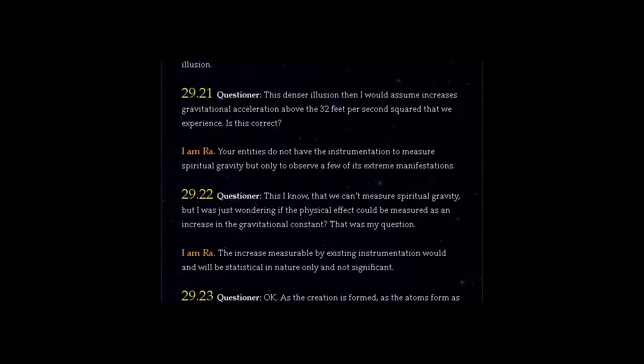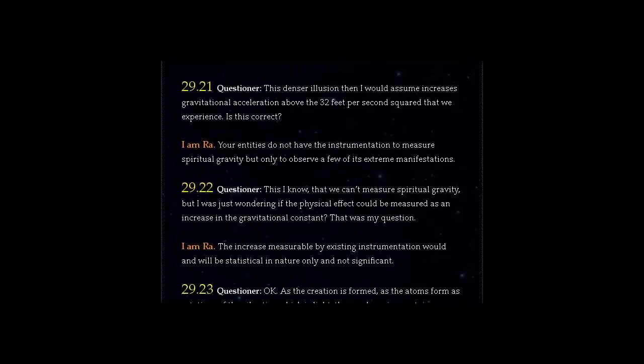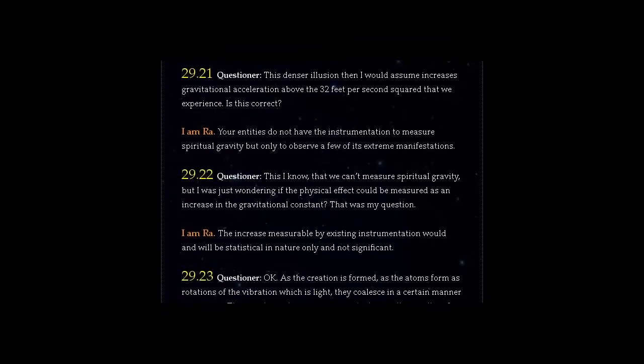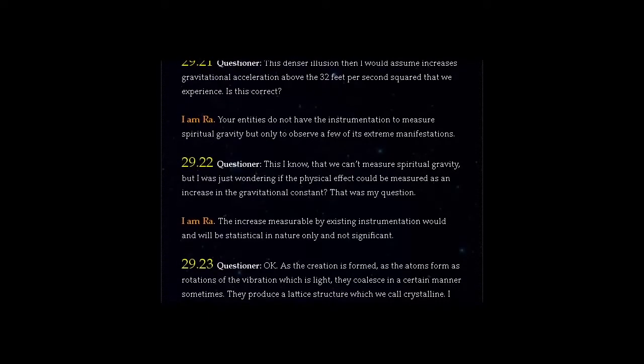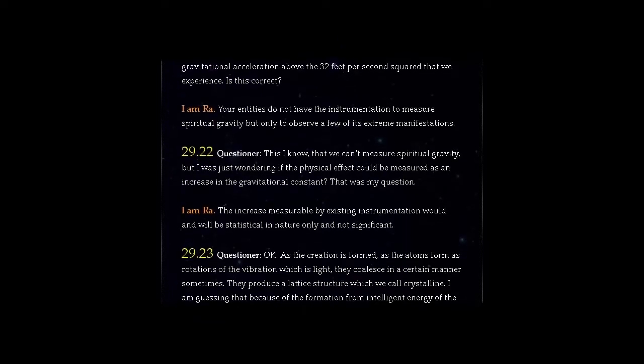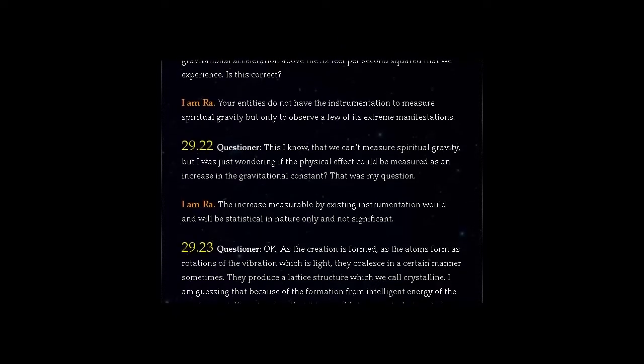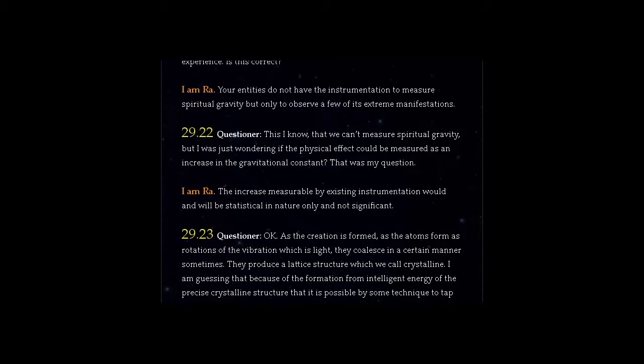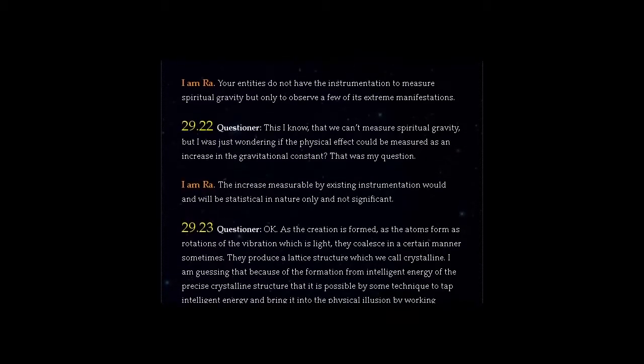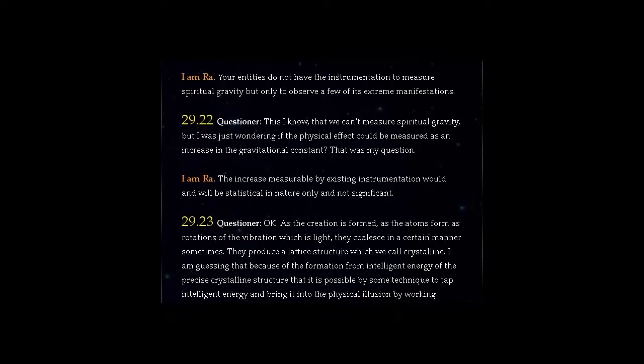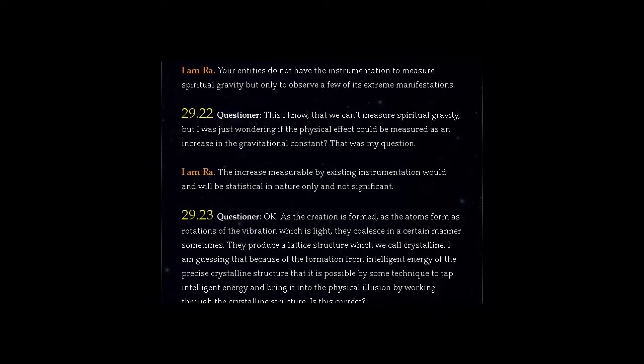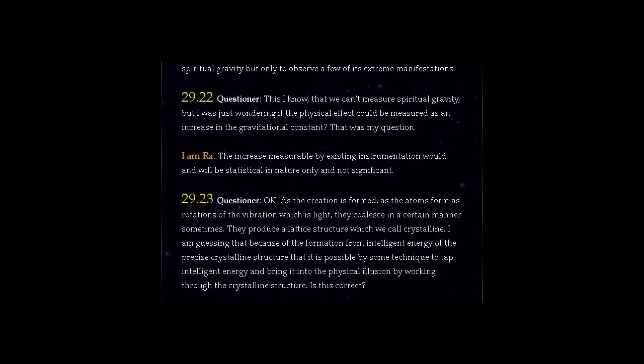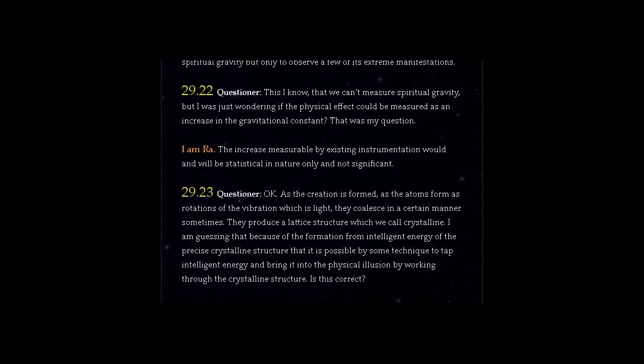Question 29.23. Questioner, okay as the creation is formed, as the atoms form as rotations of the vibration which is light, they coalesce in a certain manner sometimes. They produce a lattice structure which we call crystalline. I am guessing that because of the formation from intelligent energy of the precise crystalline structure that it is possible by some technique to tap intelligent energy and bring it into the physical illusion by working through the crystalline structure. Is this correct?